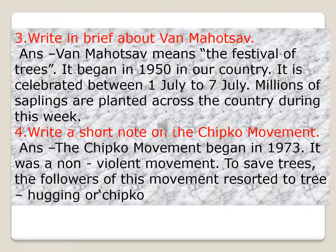Question number three: write in brief about Van Mahotsav. Van Mahotsav means the festival of trees. It began in 1950 in our country and is celebrated between 1st July to 7th July. During this week, millions of saplings are planted across the country. Everybody plants trees during this week, and that is why it is called Van Mahotsav.